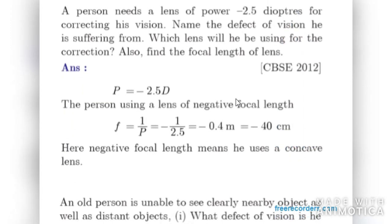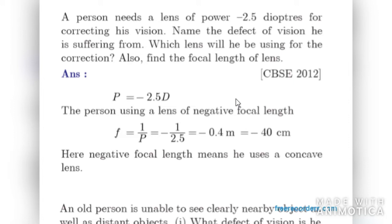Moving on to next. A person needs a lens of power -2.5 diopter for correcting his vision. Name the defect of vision he is suffering from. Which lens will he be using for the correction? Also find the focal length of the lens. The power given is -2.5 diopter, that means the lens is concave lens. Now we can find out F for it. F will be 1 over P, that will be -1 over 2.5, that is -40 cm. It is concave lens with focal length -40 cm.